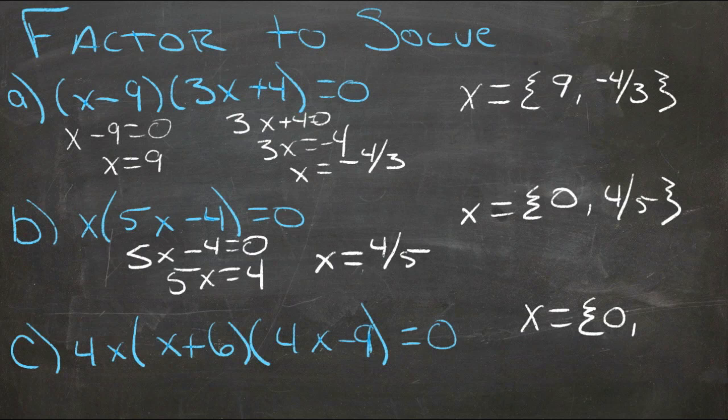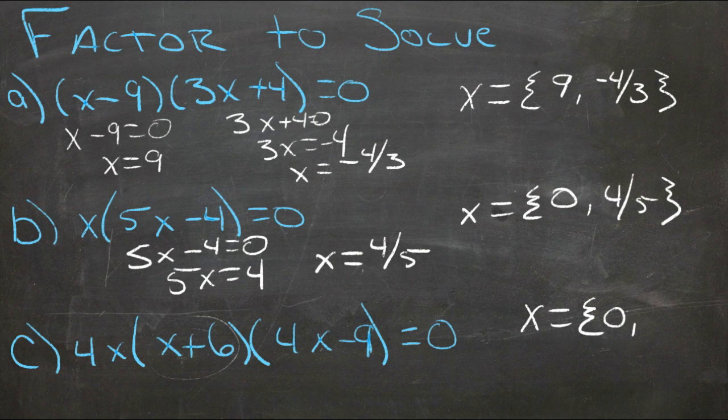The next solution is whatever it takes to make this equal to zero. And we can see that since we're adding 6 to something, and we want it to be zero, x should be negative 6. So that's our second solution.